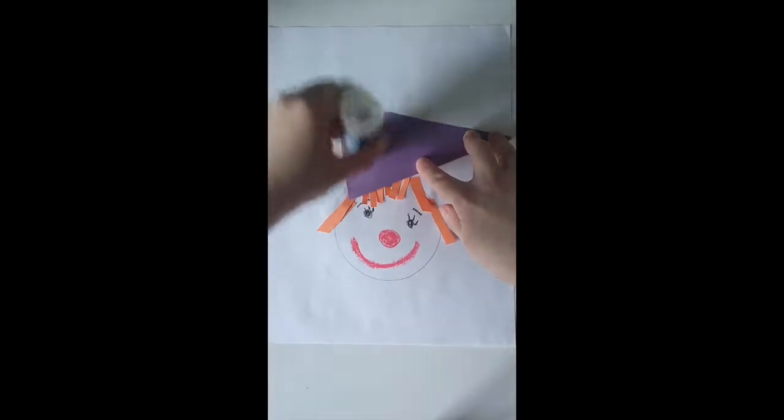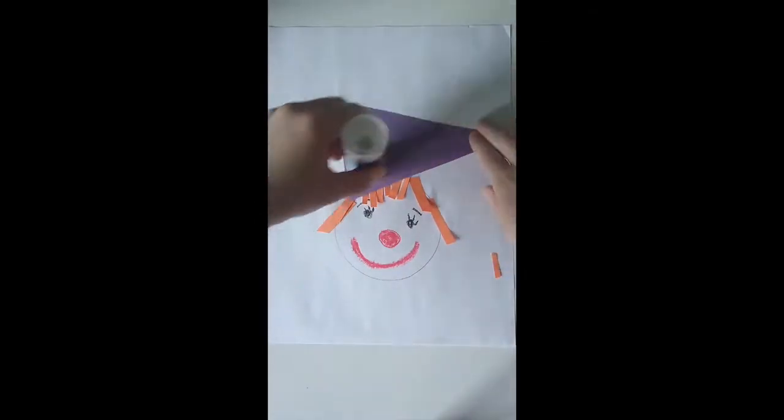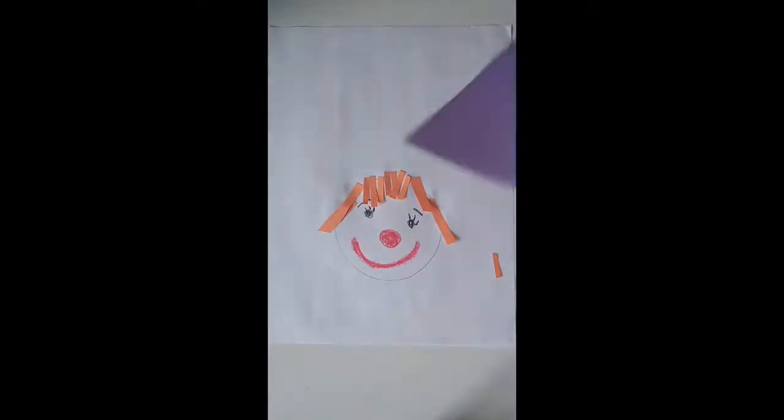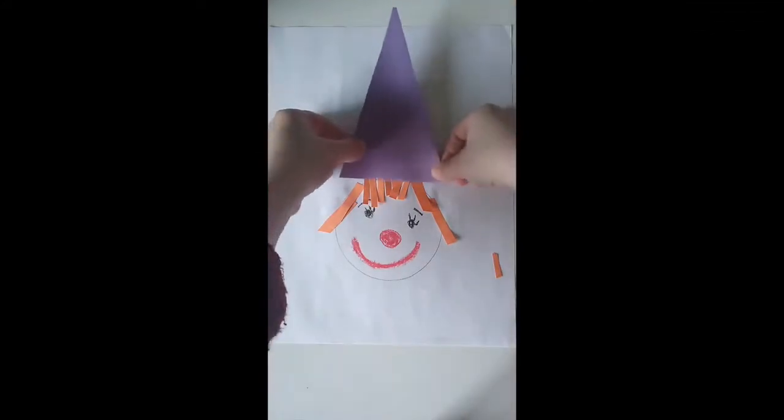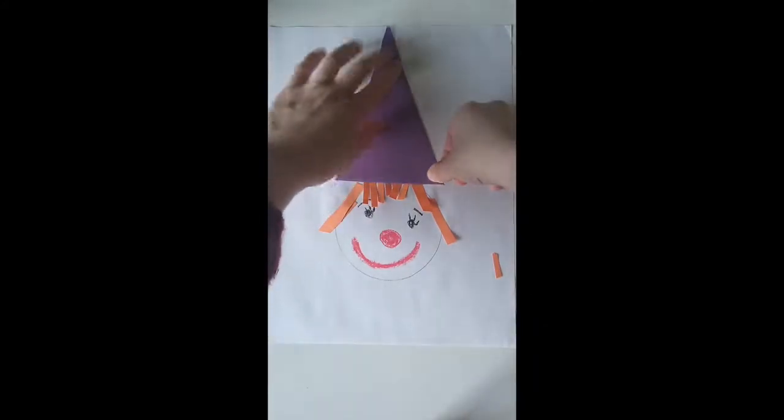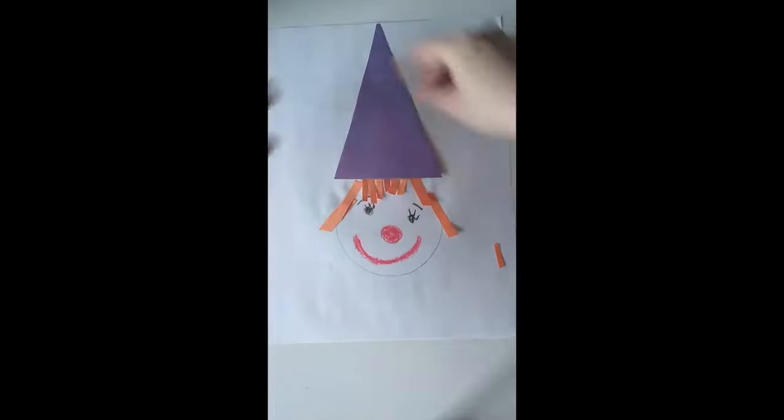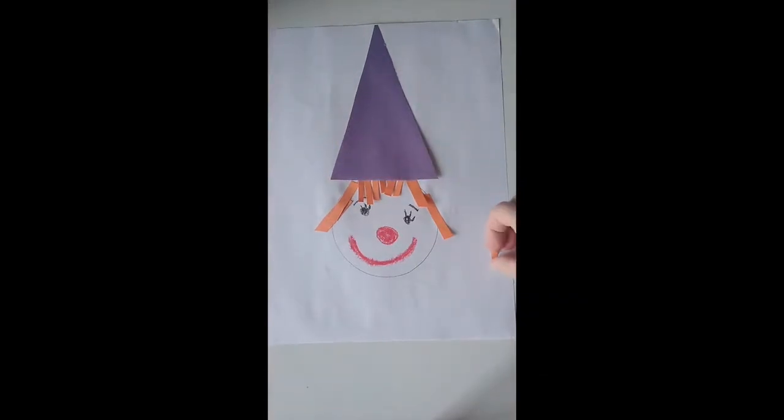So, some glue, try and spread it around. So, here's his hat, and if you have something to decorate it, you can draw some patterns on his hat. You know, remember, Circus is all about colors and patterns, and making things as bright as you can.